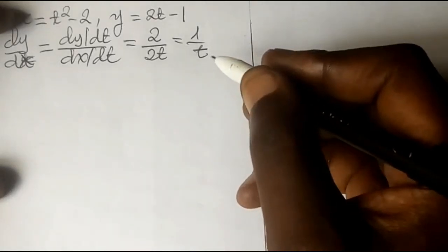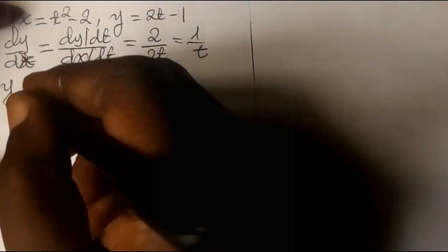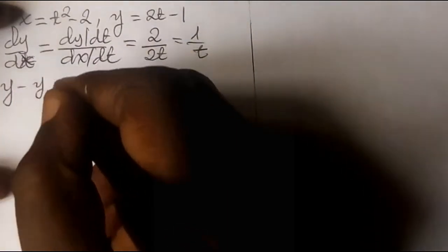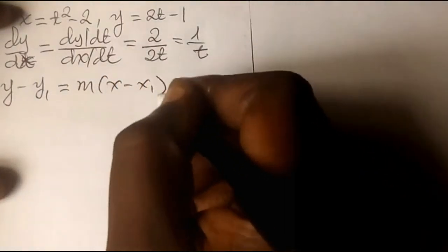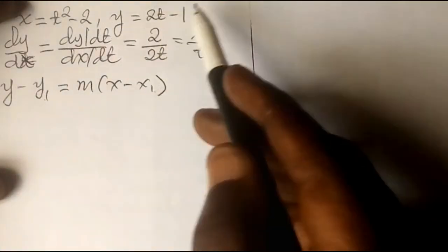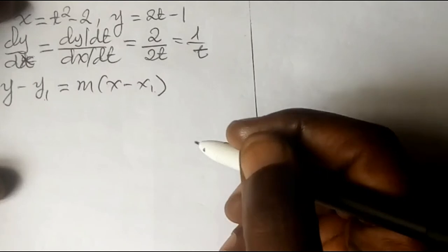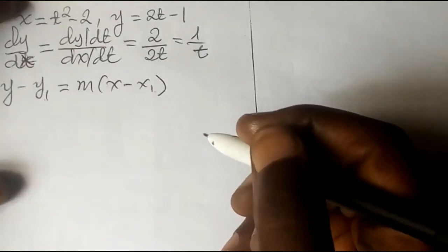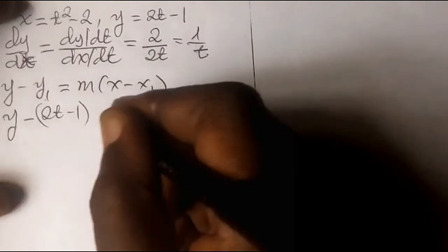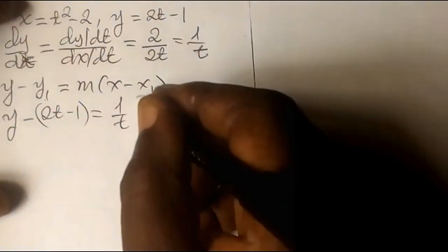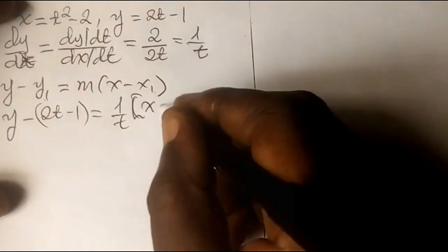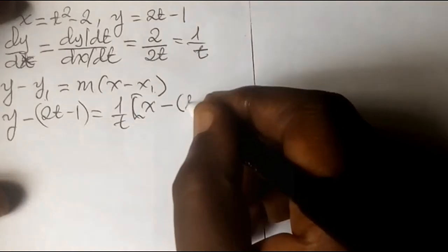To find the general equation of the tangent at the point with parameter t, we use the straight line equation: y minus y1 equals m times x minus x1. Here, x1 and y1 are the values of the parametric functions, so x1 equals t squared minus 2 and y1 equals 2t minus 1. Substituting, we get y minus (2t minus 1) equals 1 over t times x minus (t squared minus 2).